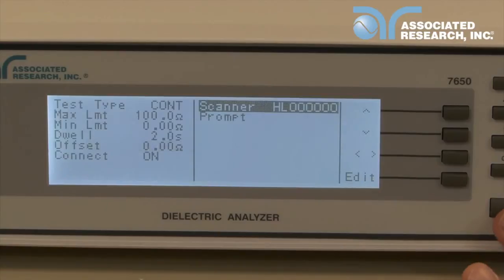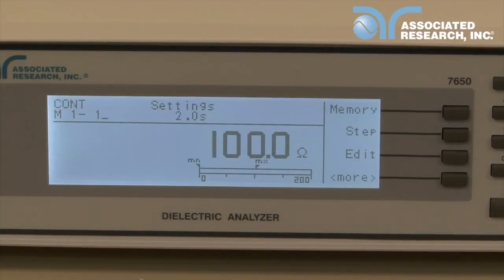Now, press the exit key twice to return to the main window. You will notice that the step number now has an underscore next to it. This indicates that memory 1 step 1 is connected to memory 1 step 2. These two steps will now run as a sequence.